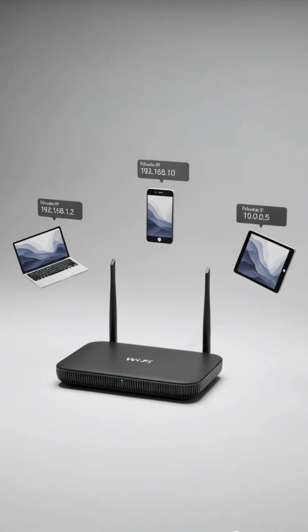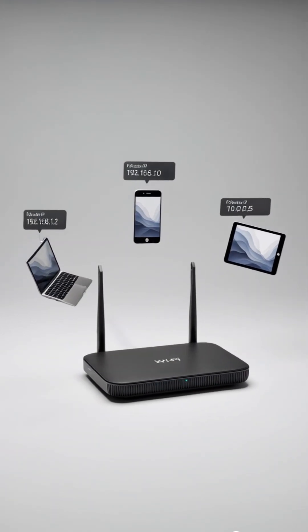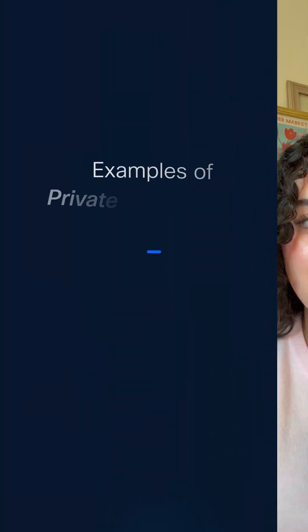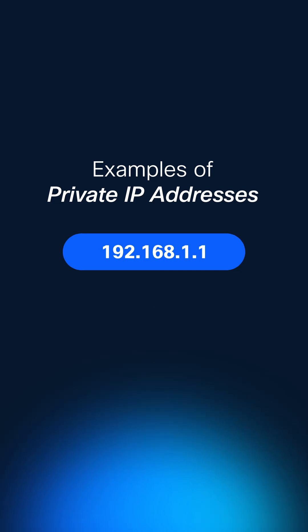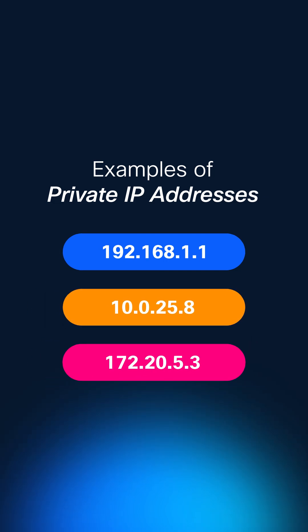In the CCST networking exam, it is also important to understand the difference between public versus private IP addresses. Some IP addresses are private and only used within your home or office network. These addresses are not routable on the internet. These usually start with 192.168, 10, or 172.16 through 31. Most importantly, these addresses are not directly accessible from the internet — they are meant for local use only.